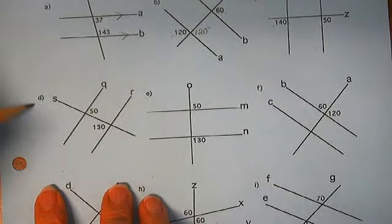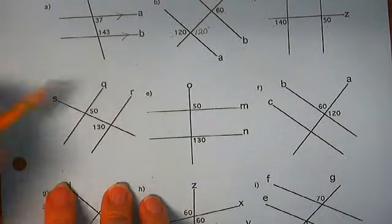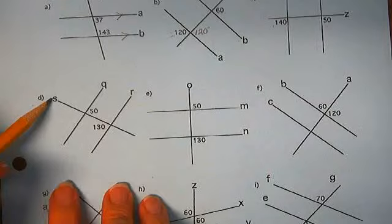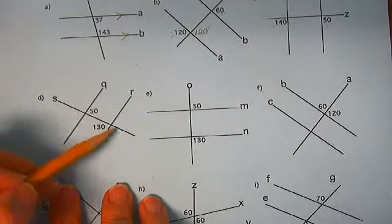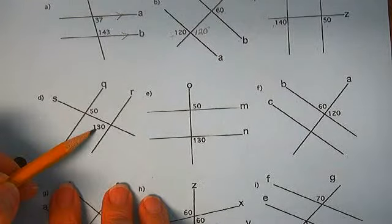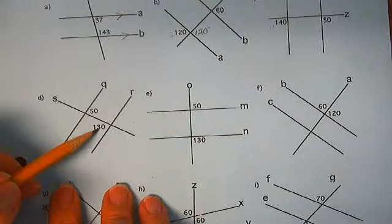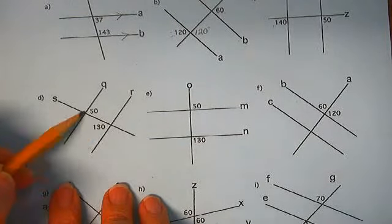Proving lines parallel, D, E, and F. What do we have? Two lines cut by a transversal, alternate interior angles, opposite sides of the transversal between the two lines.